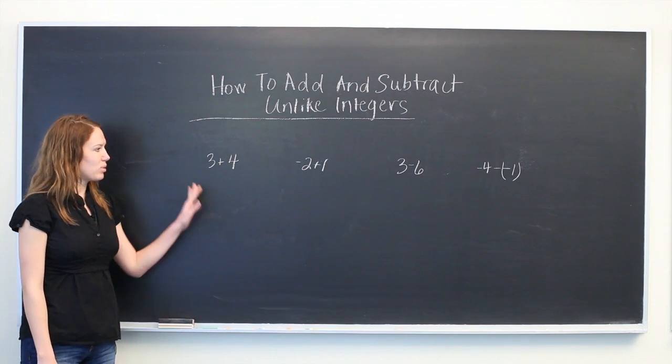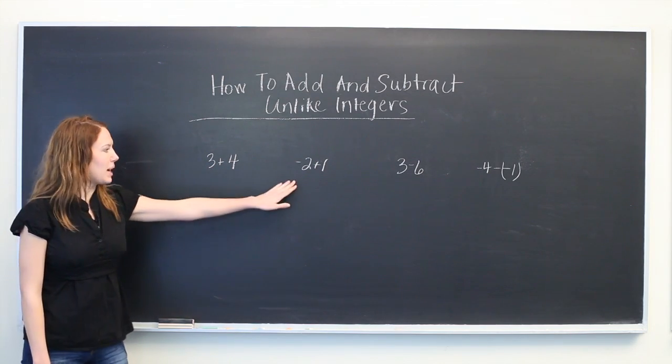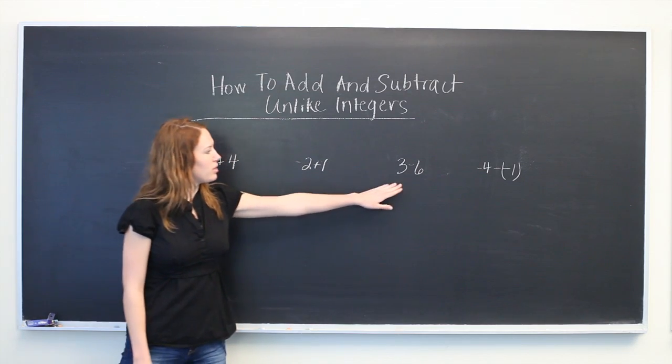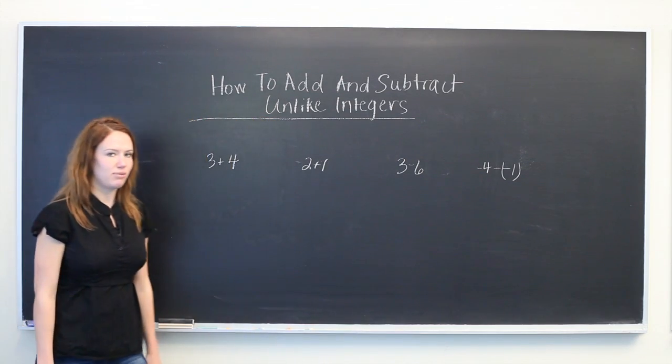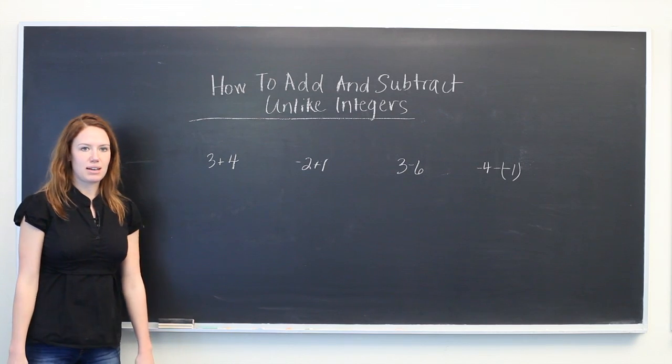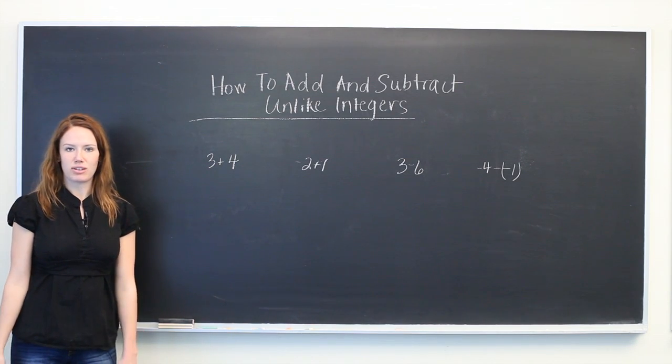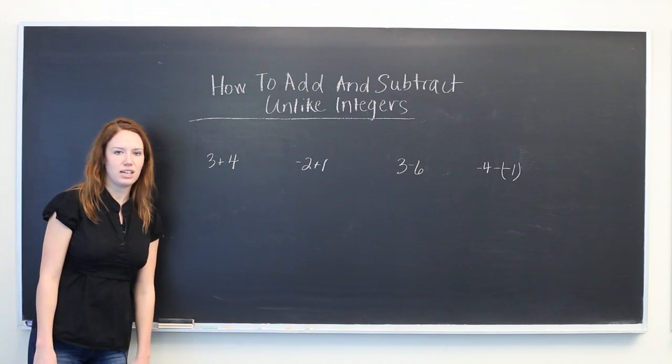Here we have four different examples: 3+4, -2+1, 3-6, and -4-(-1), which are all examples of the addition or subtraction of two unlike integers.